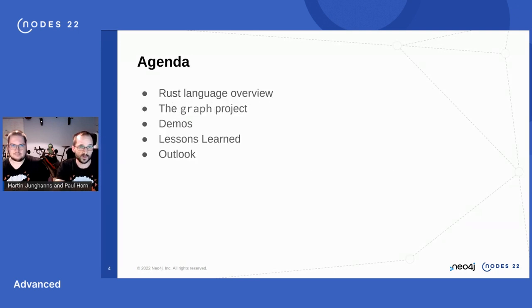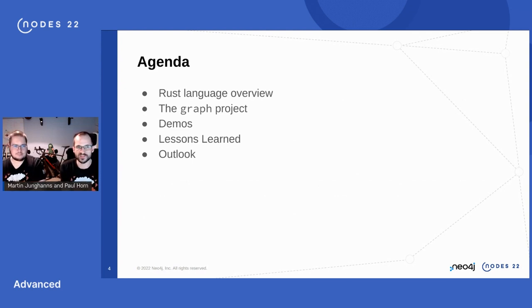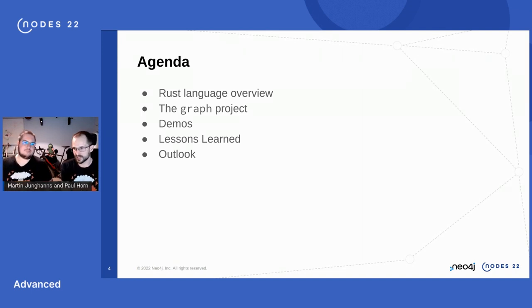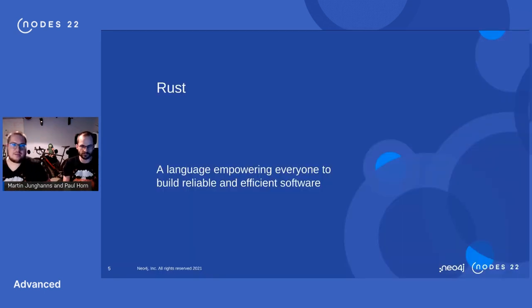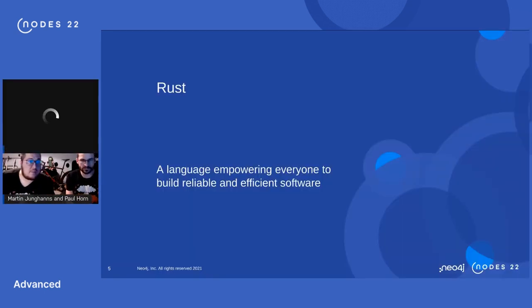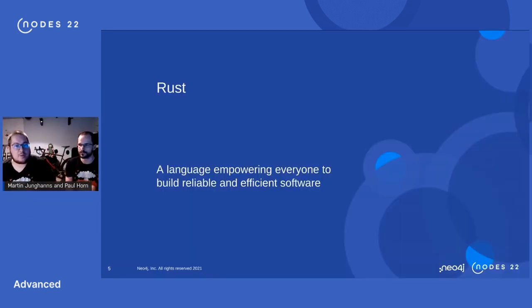In this talk we will start with a short overview of the Rust language, then talk about the graph project itself, do some demos, and conclude with lessons learned and outlook. Q&A will be in the chat afterwards. Over to Paul.